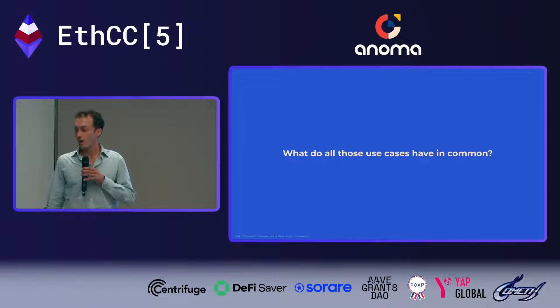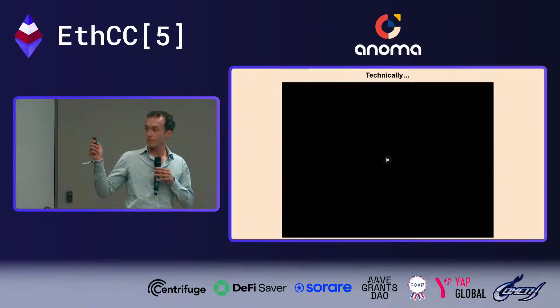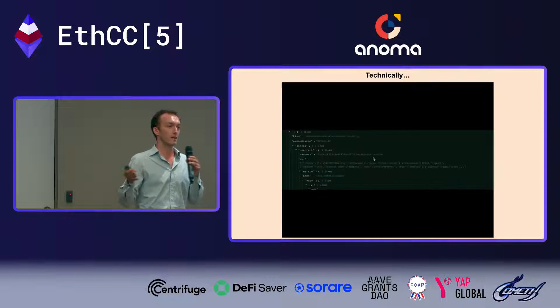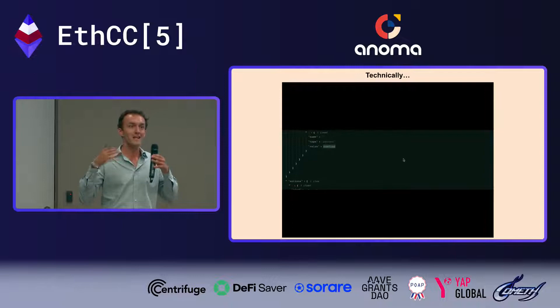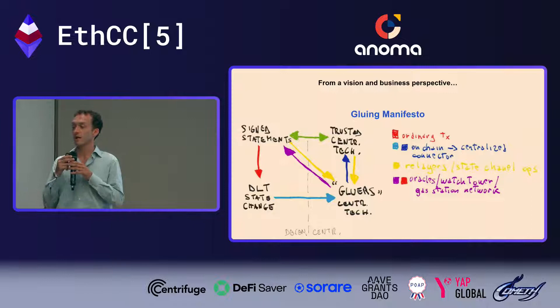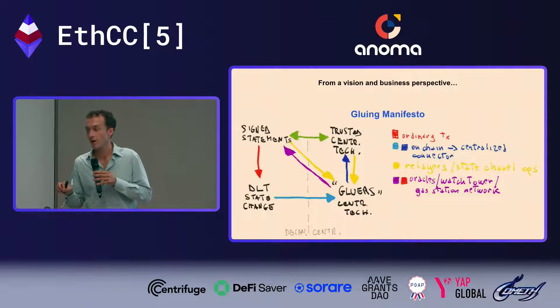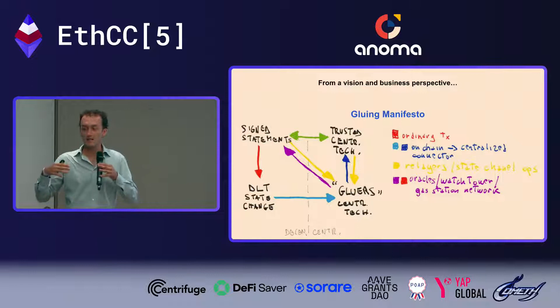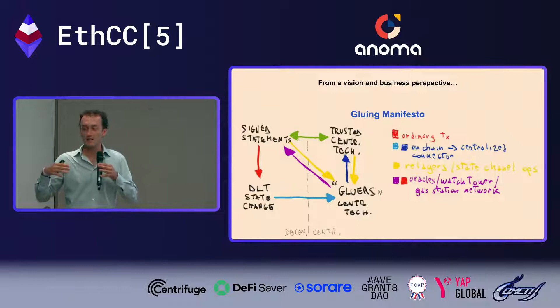In a nutshell, we are a full-stack, no-code, cross-chain automation platform. From a technical point of view, we've created a common language — a JSON structure — to describe all these automation and notification needs, connecting decentralized and centralized technologies. From a vision perspective, we think that in a few years we won't discuss anymore about decentralized versus centralized; they will all be part of the digital space and we need more connection between the centralized technologies running the world today and decentralized ones.